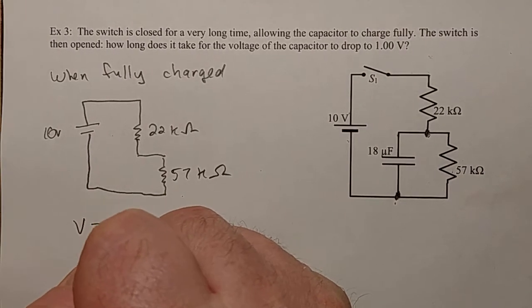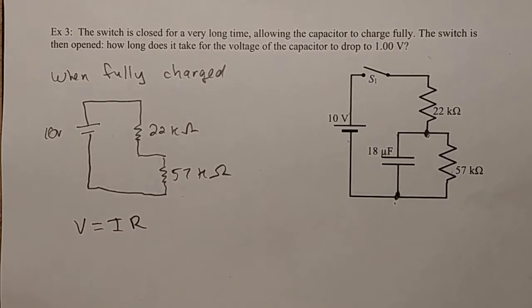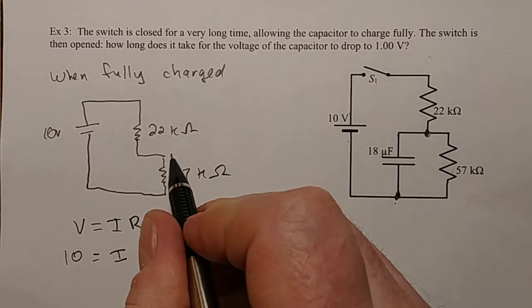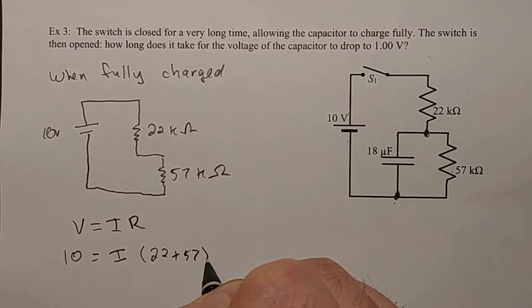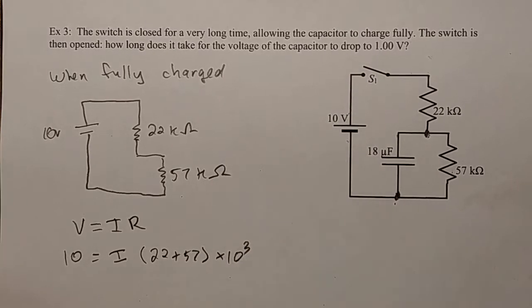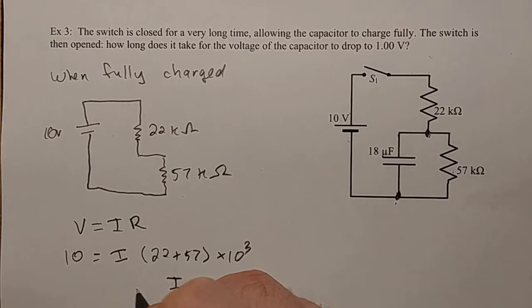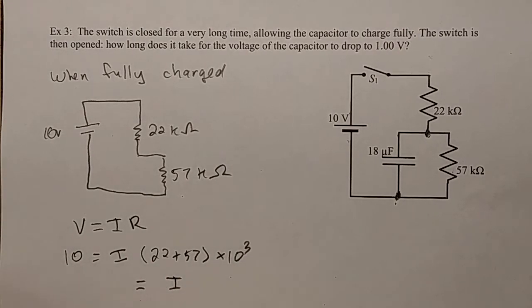So I'm going to apply V equals IR to the whole system here, and what I get is 10 equals I times (22 plus 57) times 10 to the 3. I feel like I must have this written down somewhere. Yes, I do. So I'm not starting from scratch. And from that, I find out that I is equal to 1.266 times 10 to the negative 4 amps.